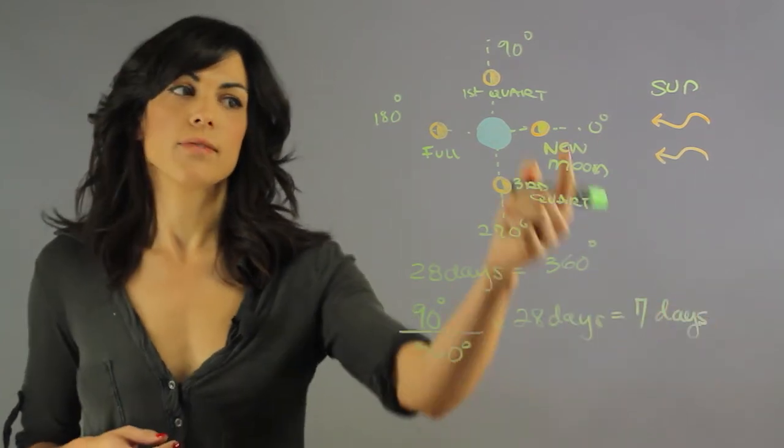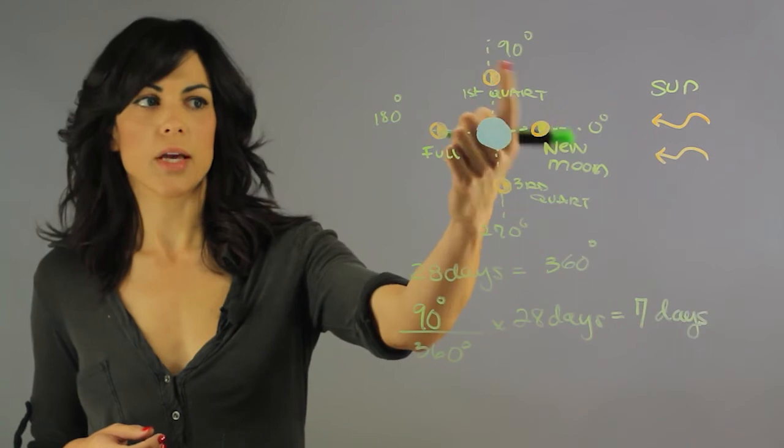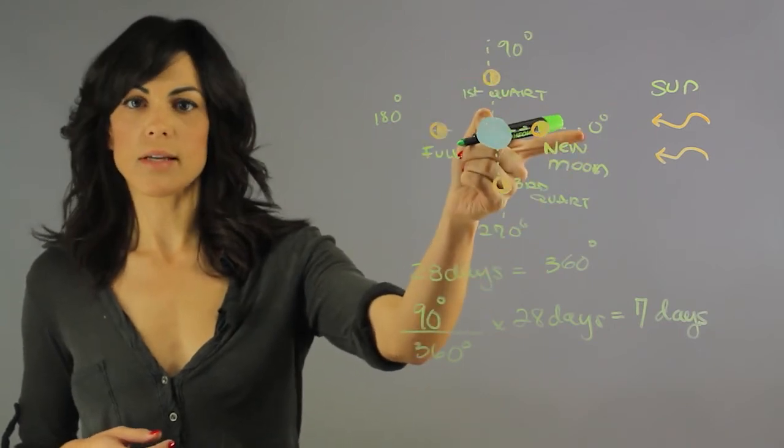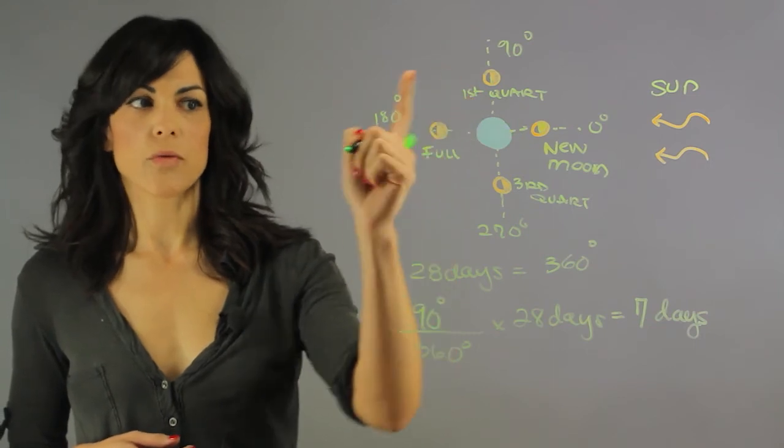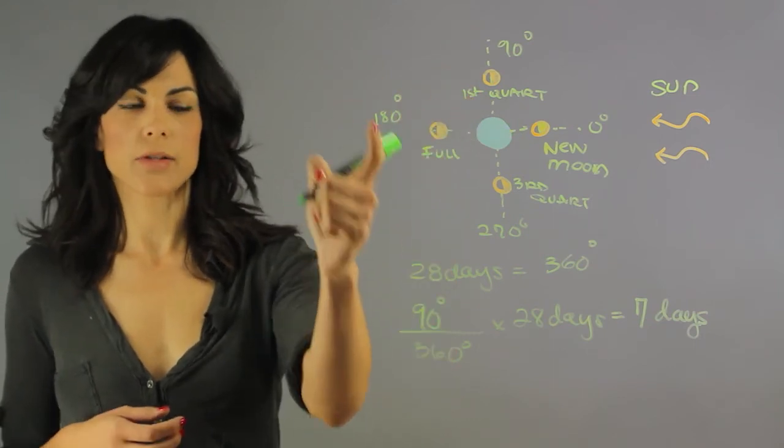So every seven days we change 90 degrees. So the first seven days, it will go from new moon to first quarter. The next seven days, it will go from first quarter to full moon and so forth.